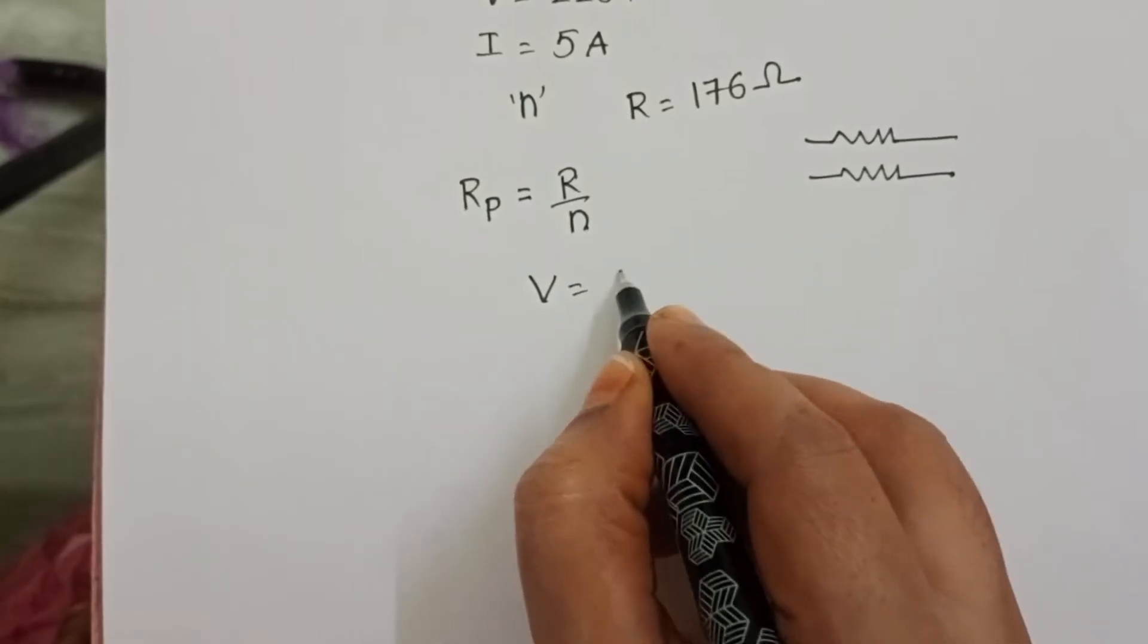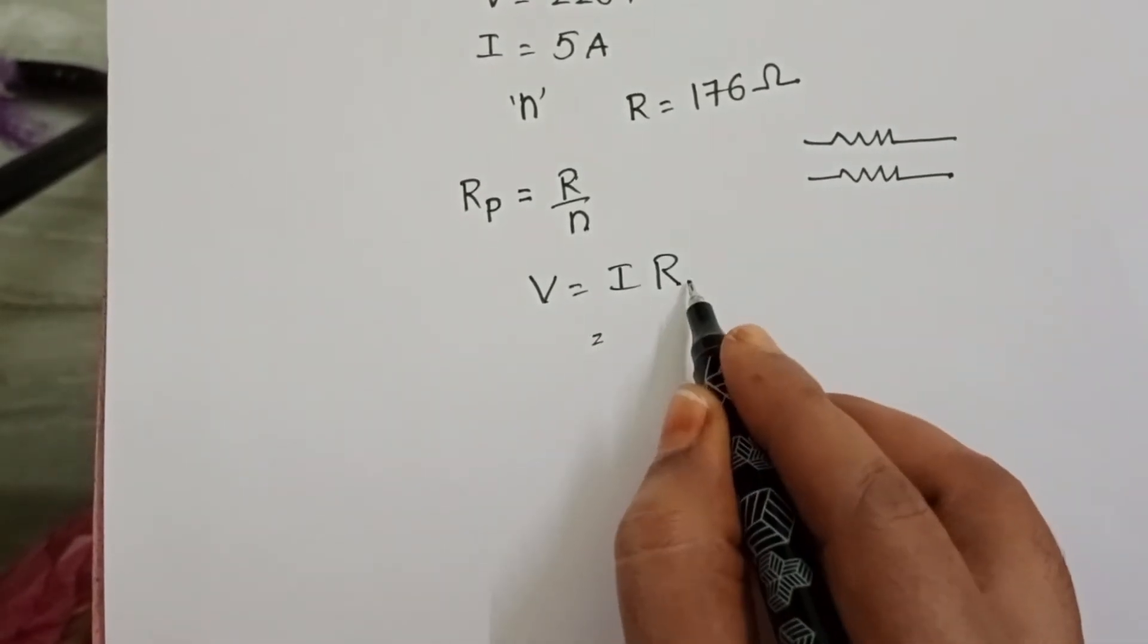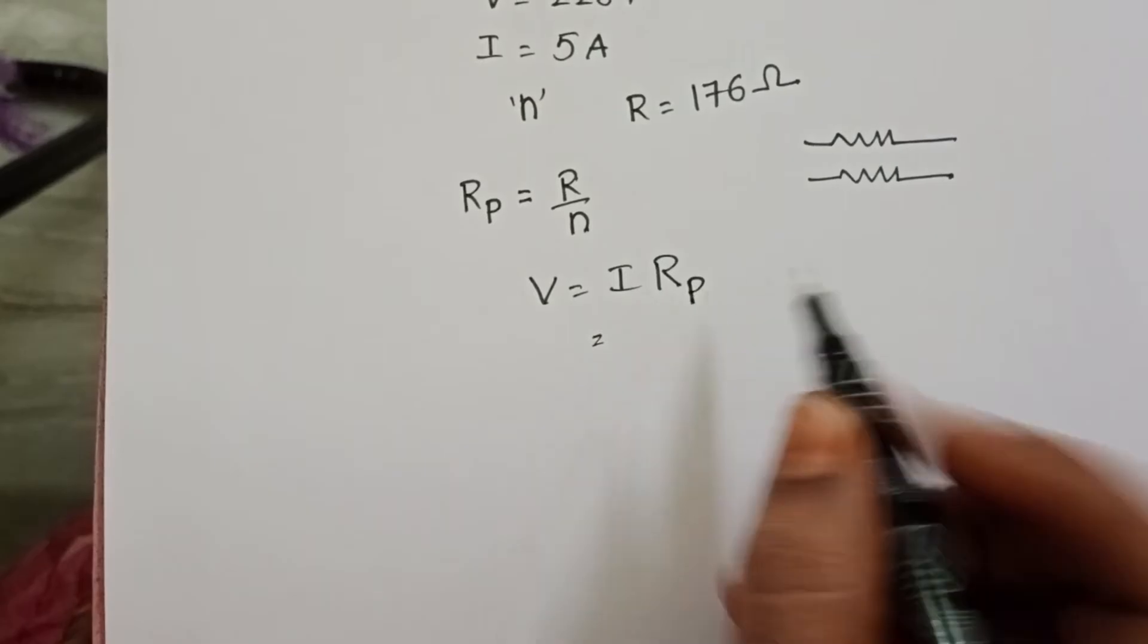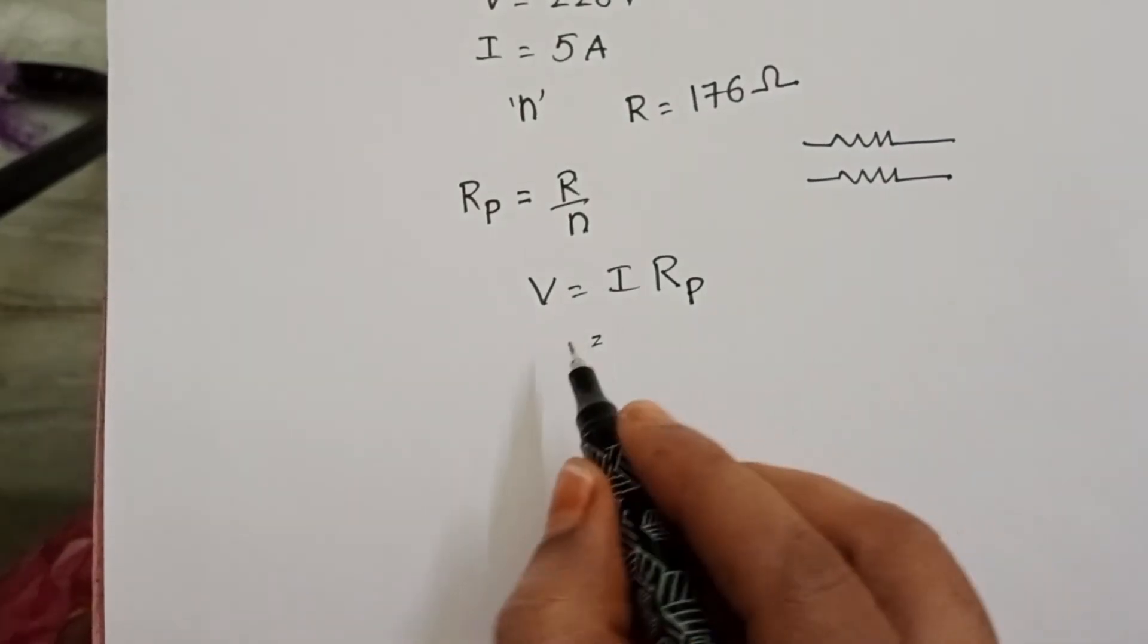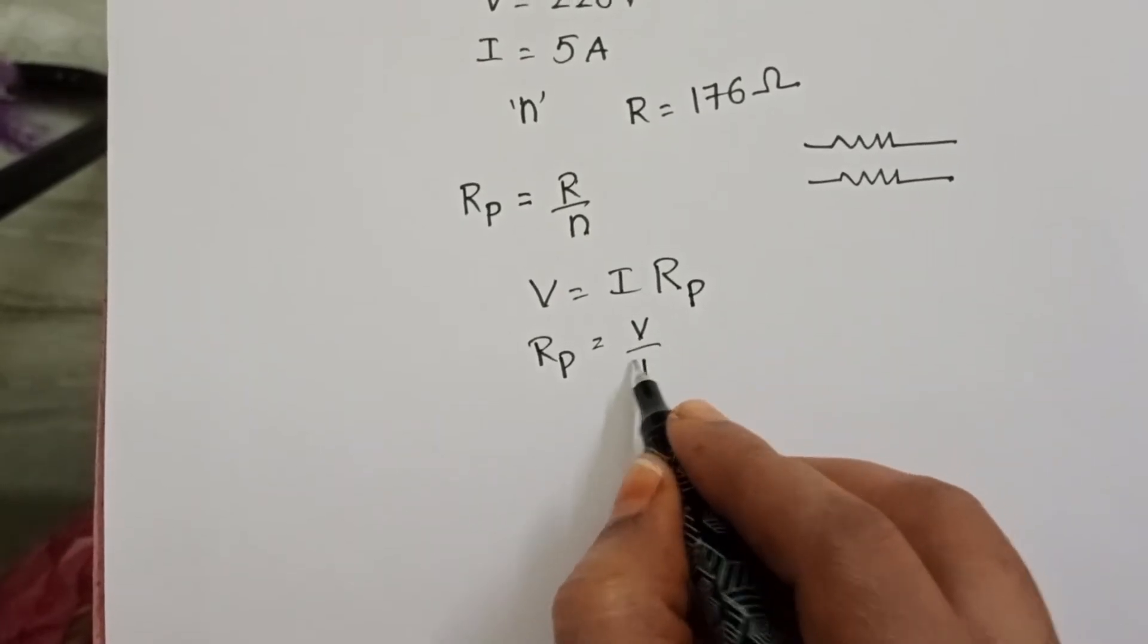Take Ohm's law: V equals I times R. Here R is the equivalent resistance in parallel connection. From this, R equals V by I.